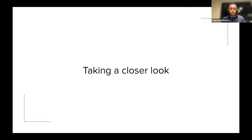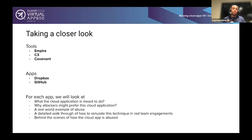So we've talked about what Cloud C2 is and looked at trends happening in the wild. Now we want to take a closer look at how to simulate this in our network so we can see if the controls we have can identify this tactic. We're primarily going to use three tools: Empire, C3, and Covenant. We're going to focus on two applications — Dropbox and GitHub — as representatives for cloud storage and development tools respectively. For each app, we'll discuss what it's meant to do, why an attacker would abuse it, go over a real-world example, do a detailed walkthrough of how to simulate it in a red team engagement, and briefly look at what's happening under the hood.